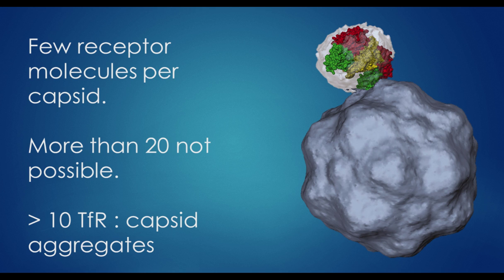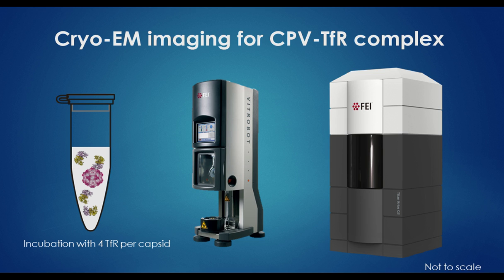We also found that when we worked with the complexes, if we used more than about 10 TFR per capsid, that ratio led to aggregation. So we knew moving forward that we'd have to focus on solving this structure in an asymmetric way. Using our black-backed jackal purified TFR and purified canine capsids, we made an incubation of about four TFRs per each capsid. Then we vitrified that solution, and the robot for vitrification is shown in the center, and then collected data using the Titan Kryos.